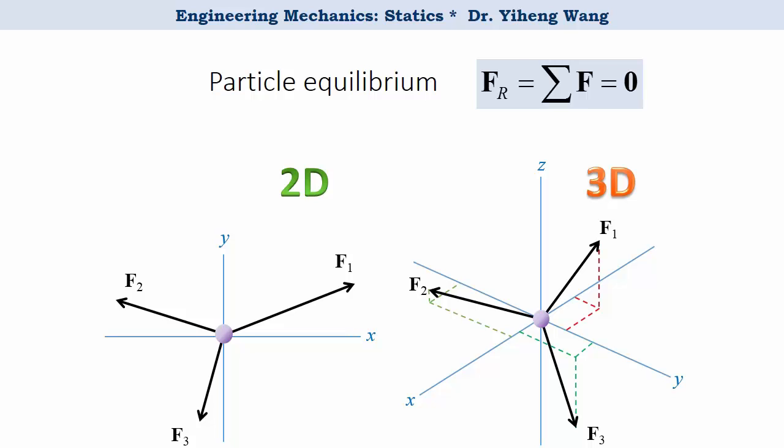For a 2D problem, the vector equation can be written as two scalar equations, that the resultant forces in the x and y direction must equal zero respectively. And for a 3D problem, the vector equation becomes three scalar equations, that the resultant forces in the x, y, and z direction must all be zero.